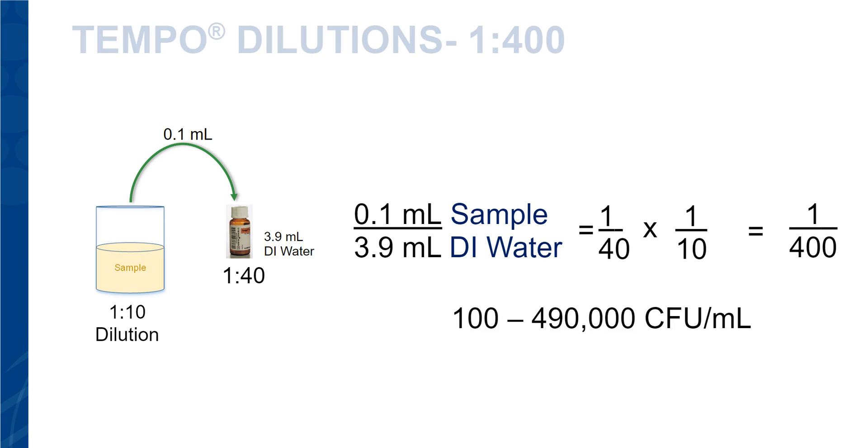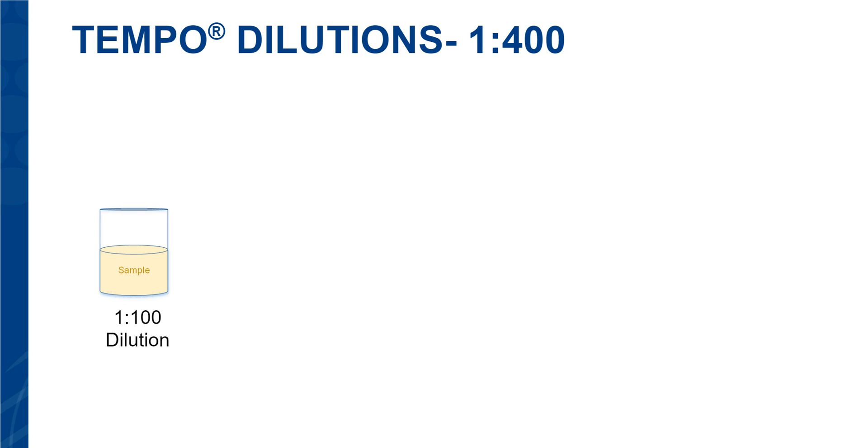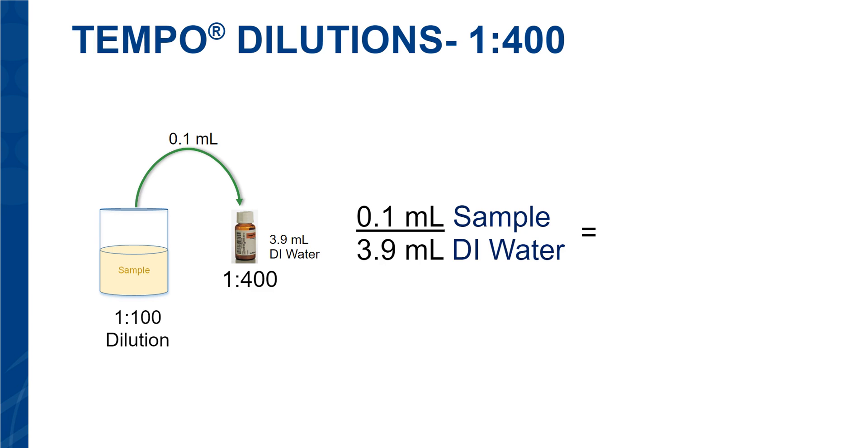If you need a higher range of count, then you have to start with a different original sample. So, for example, you can start from an original sample 1 to 100, and if you take 0.1 ml of sample into a vial that has been hydrated with 3.9 ml of DI water, you now have a dilution of 1 to 4,000, giving you a countable range of 1,000 CFU to 4,900,000 CFUs.